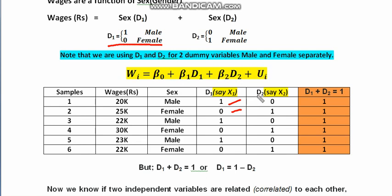For D2, it is just the opposite: 0 is for male and 1 is for female. So for the first sample, which is male, D2 equals 0. For the second sample, which is female, D2 equals 1. In this way, all the data are inserted for both D1 and D2.